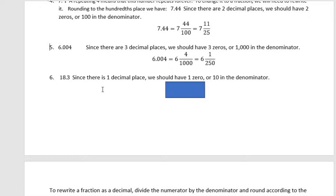Eighteen point three. There's one decimal place, so one zero or ten in the denominator. The eighteen is still going to be eighteen. We have eighteen and three tenths. Notice that I read that the same, whether it's a fraction or a decimal.